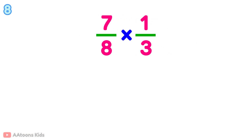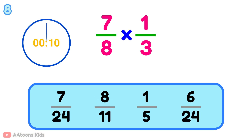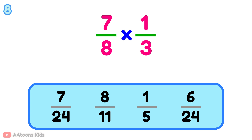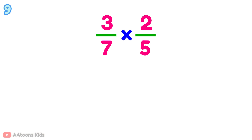What is 7 over 8 multiplied by 1 over 3? 7 over 24. What is 3 over 7 multiplied by 2 over 5?